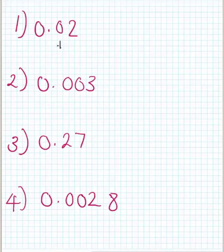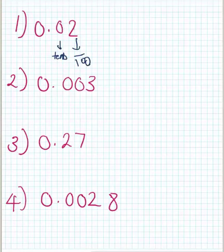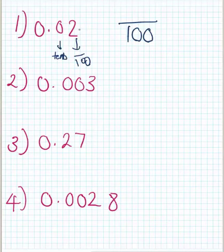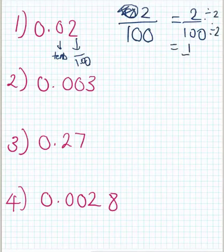With 0.02, zero is in our tenths column and two is in our hundredths column. Count how many decimal places you have — that is, how many numbers after the decimal point. We've got one and two, so two decimal places. That means our denominator will have two zeros, giving us one hundred. On top, we put the numbers we see — the leading zero doesn't have to be there — so the answer is 2 out of 100. Simplified by dividing both by 2, we get 1 over 50.